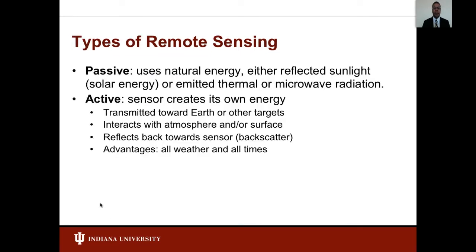There are two types of sensors in remote sensing: passive and active. Passive sensors can be used to detect energy when naturally occurring energy is available. For reflected energy, this can only take place during the time when the sun is illuminating the earth. Energy which is naturally emitted can be detected day or night as long as the amount of energy is large enough to be recorded. Active sensors, however, include the ability to obtain measurements anytime regardless of the time of day or season. Active sensors can also be used for examining wavelengths not sufficiently provided by the sun, such as microwaves, or to better control the way a target is illuminated.